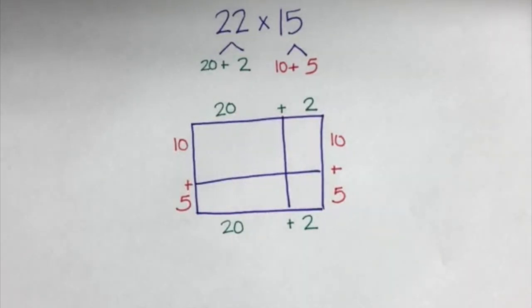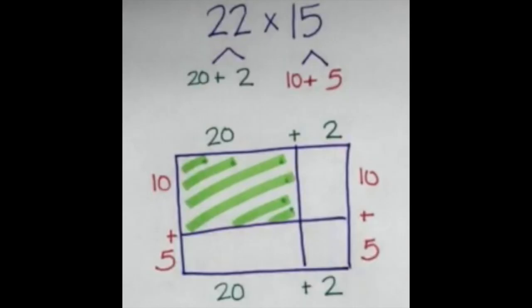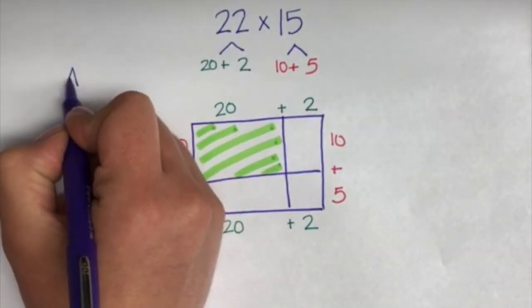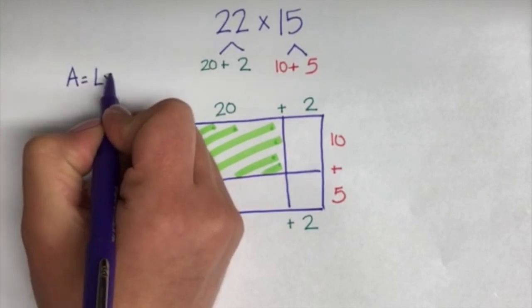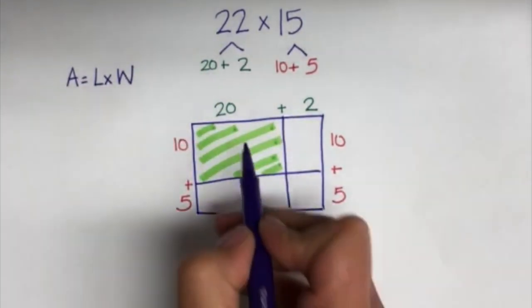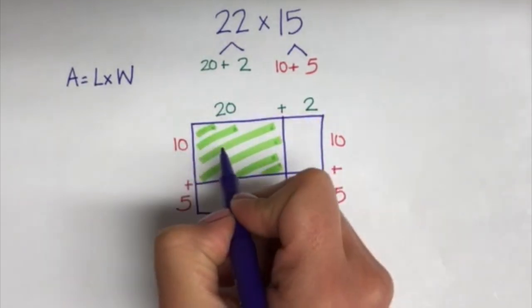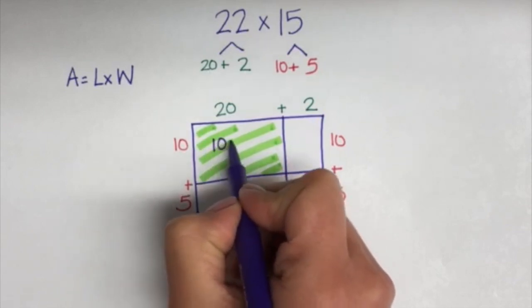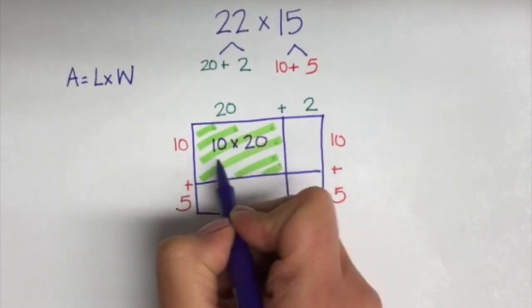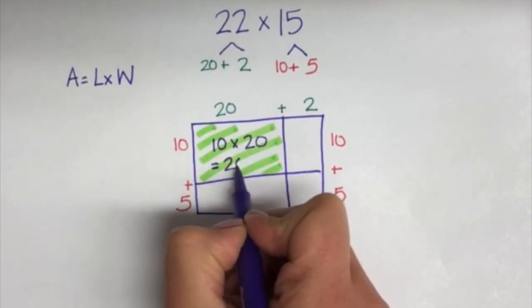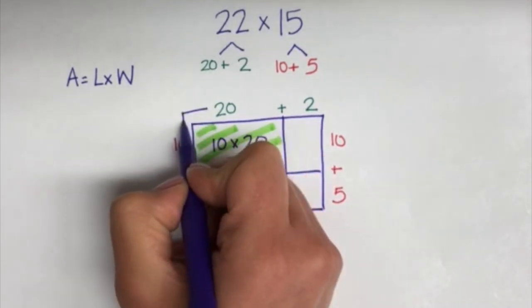Now we will move into finding each partial product, which is the area of each section of our area model. We will begin by looking at the highlighted green section in the top left corner. Finding area requires us to multiply length times width. For our first green section, we have a length of 10 and a width of 20, so we will multiply 10 times 20. Remember, when multiplying multiples of 10, you can multiply the base fact 1 times 2 and add two zeros for this problem.